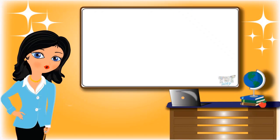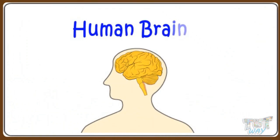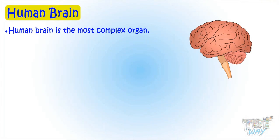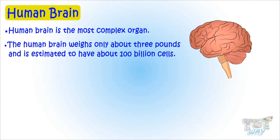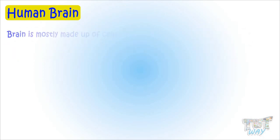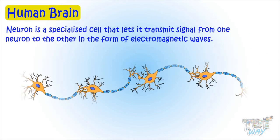Hi kids, today we will learn about the human brain. It's the main part of our central nervous system. The human brain is the most complex organ. It weighs only about three pounds and is estimated to have about 100 billion cells. The brain is mostly made up of cells called neurons.